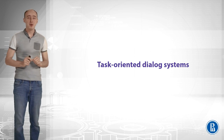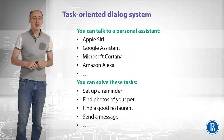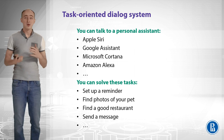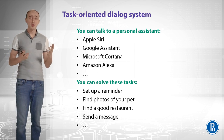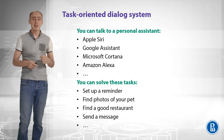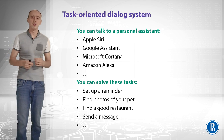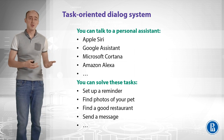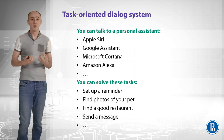This week we will talk about task-oriented dialogue systems. Where can you see them? You can actually talk to a personal assistant like Apple Siri, Google Assistant, Microsoft Cortana, or Amazon Alexa. You can solve tasks like set up a reminder, find photos of your pet, find a good restaurant, or anything else. People are really familiar with these personal assistants, and this week we will overview how you can make your own.